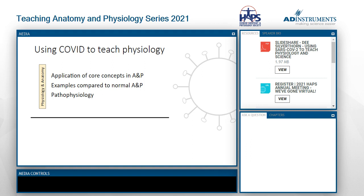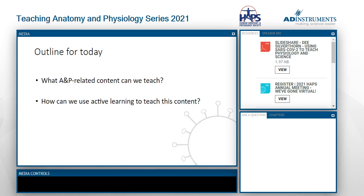It's also a good chance to show students examples of normal physiology gone wrong, and examples of where the virus is using normal physiological processes. As we do this, it becomes obvious that they get to see some of the process of how scientists think, as well as some of the uncertainty in science. Today I'm going to talk about A&P-related content we can teach, as well as how we can use active learning — a particular favorite of mine — to teach this content.